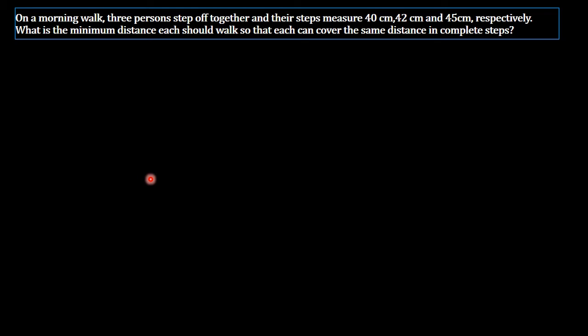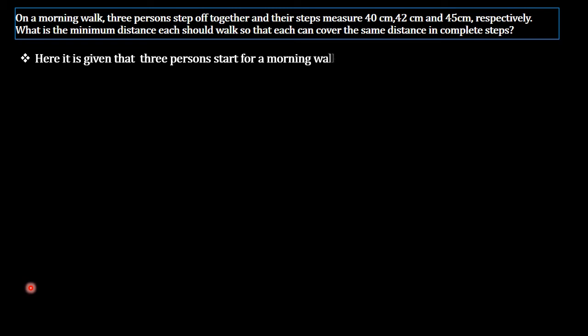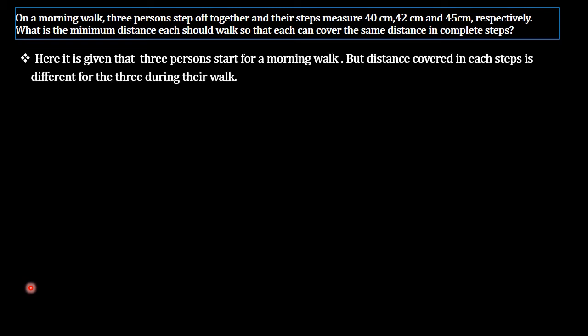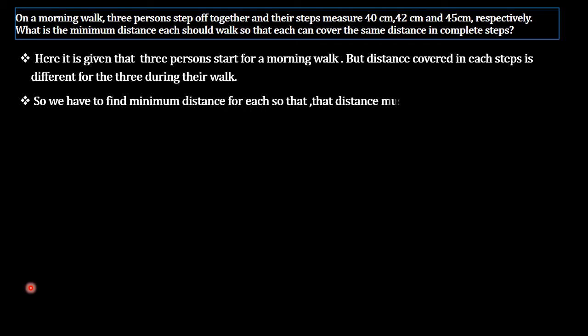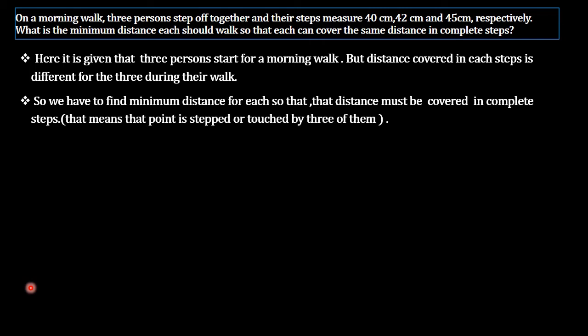Three persons start for a morning walk but the distance covered in each step is different. We have to find the minimum distance for each so that that distance is covered in complete steps — meaning that distance is reached by all three of them.